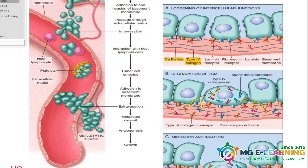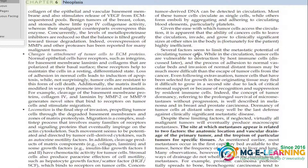When two cells come together, it is called cadherins — this is MCQ. The base membrane contains collagen fibers of type IV. You can see MCQ from this, so read it carefully.